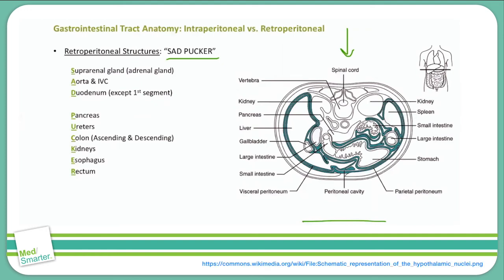You'll notice we left out a few pelvic organs. The bladder and uterus are actually subperitoneal structures, or below the peritoneal cavity. But anything else not discussed — for example, the spleen, stomach, liver, gallbladder, etc. — are all intraperitoneal.